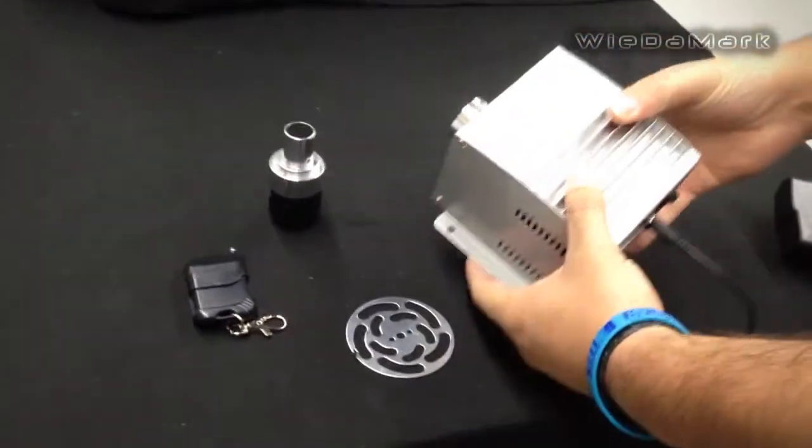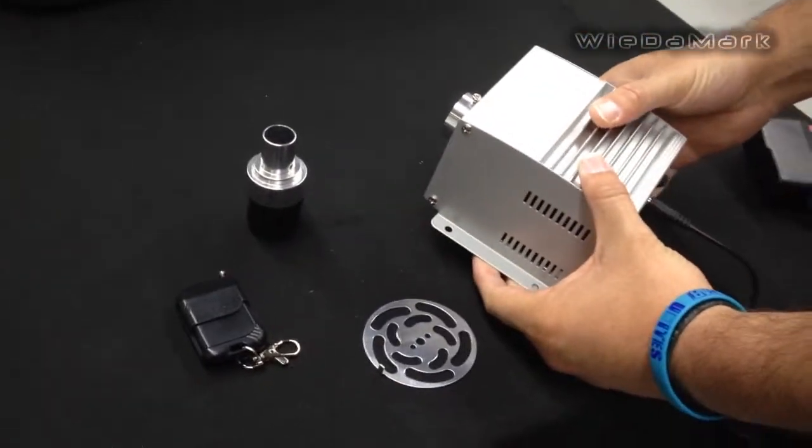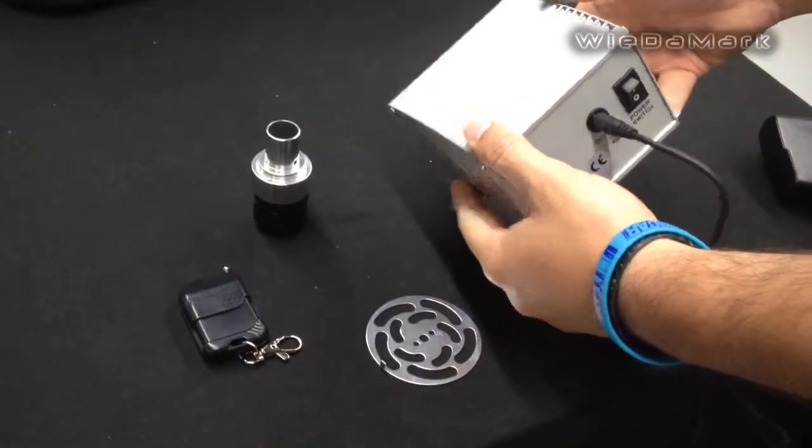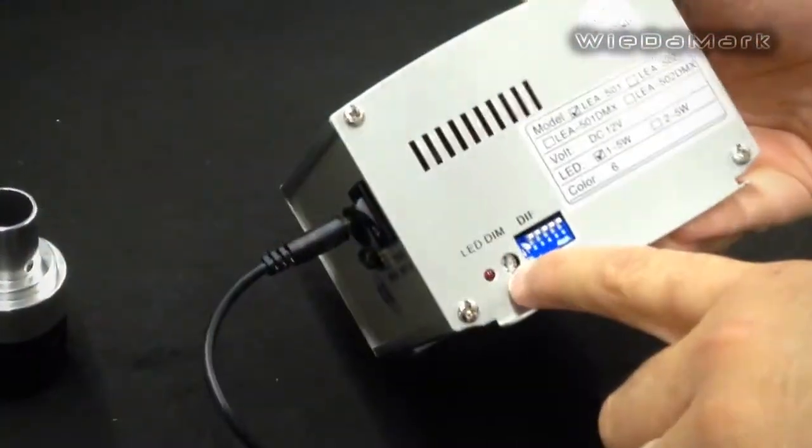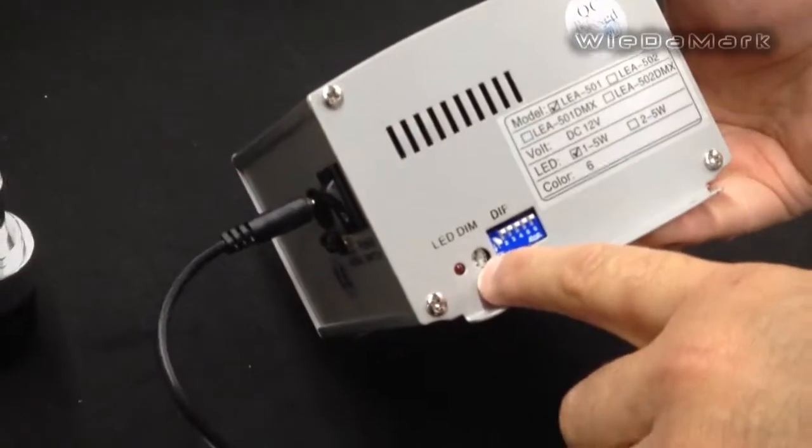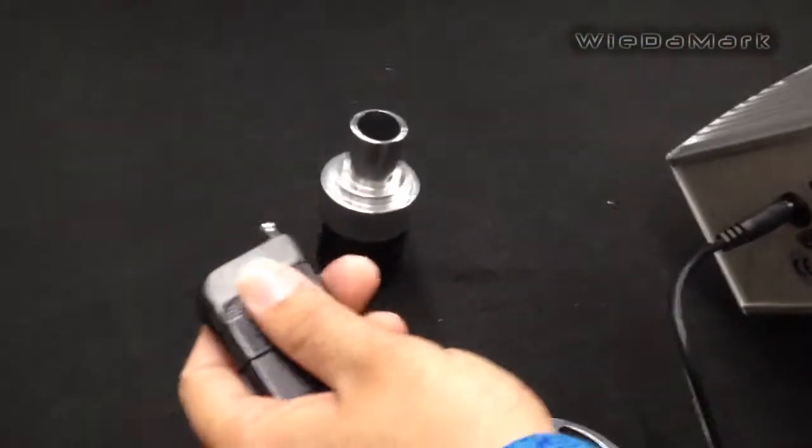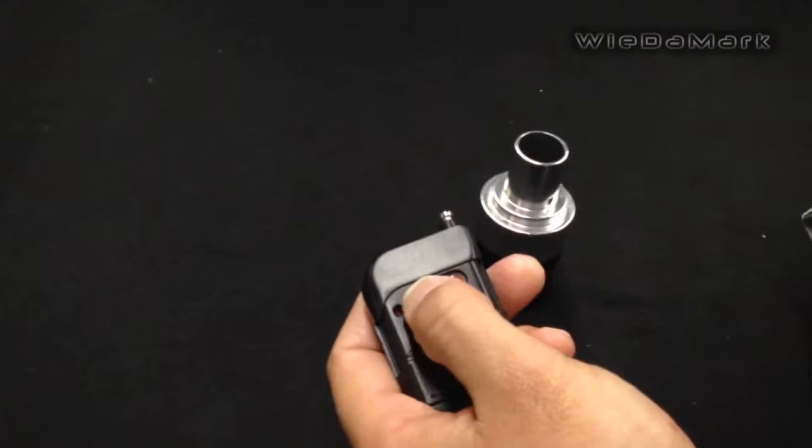Today I'm going to show you our 5 watt LED light engine or illuminator. This is our dimmable version. It's dimmable by the dimmable screw on the side of the unit as well as dimmable on the remote with the up and down buttons.